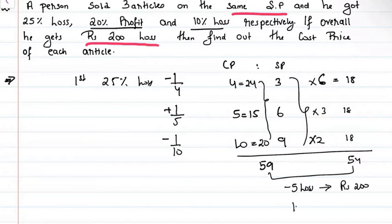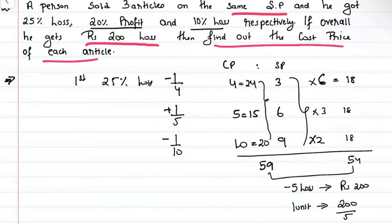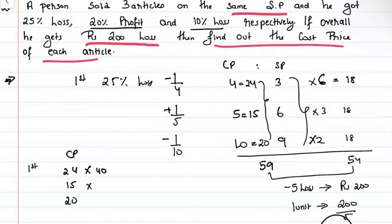Overall loss is 59 minus 54 equals 5 units. Since overall he gets Rs.200 loss, 5 units equals Rs.200, so 1 unit equals Rs.40. Cost price of first article is 24 into 40 equals Rs.960. Cost price of second article is 15 into 40 equals Rs.600. Cost price of third article is 20 into 40 equals Rs.800.